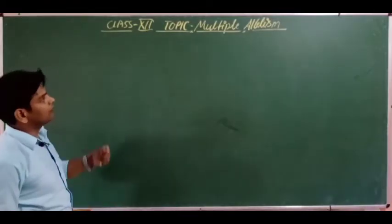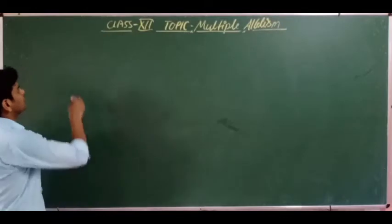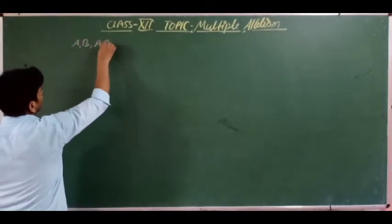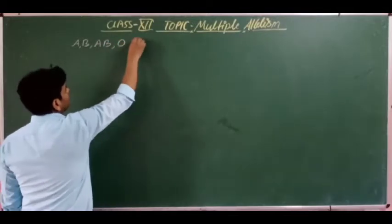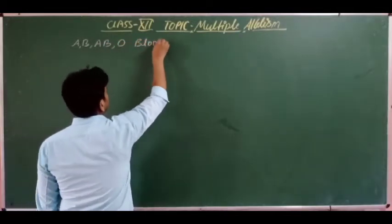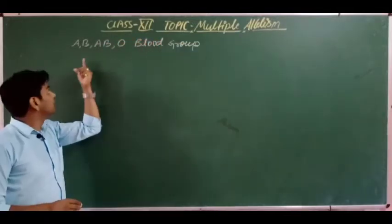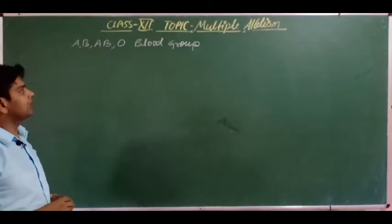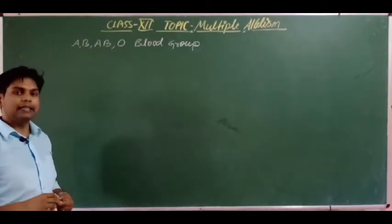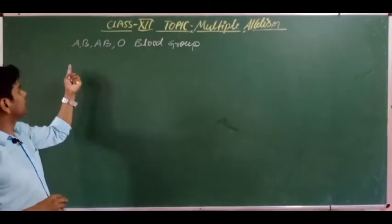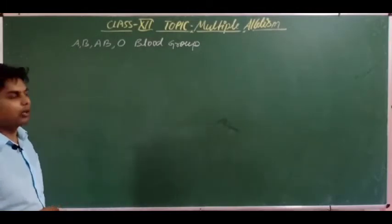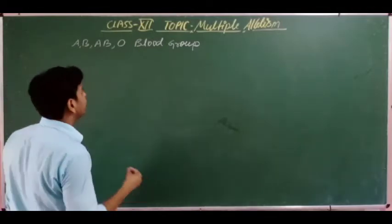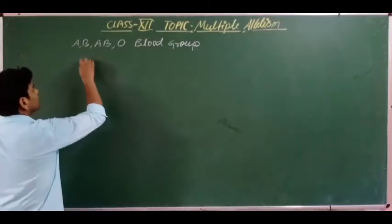The best example of multiple allelism is the ABO blood group system — blood groups A, B, AB, and O. Blood groups were discovered by Karl Landsteiner, who divided the groups on the basis of the presence of antigens and antibodies.